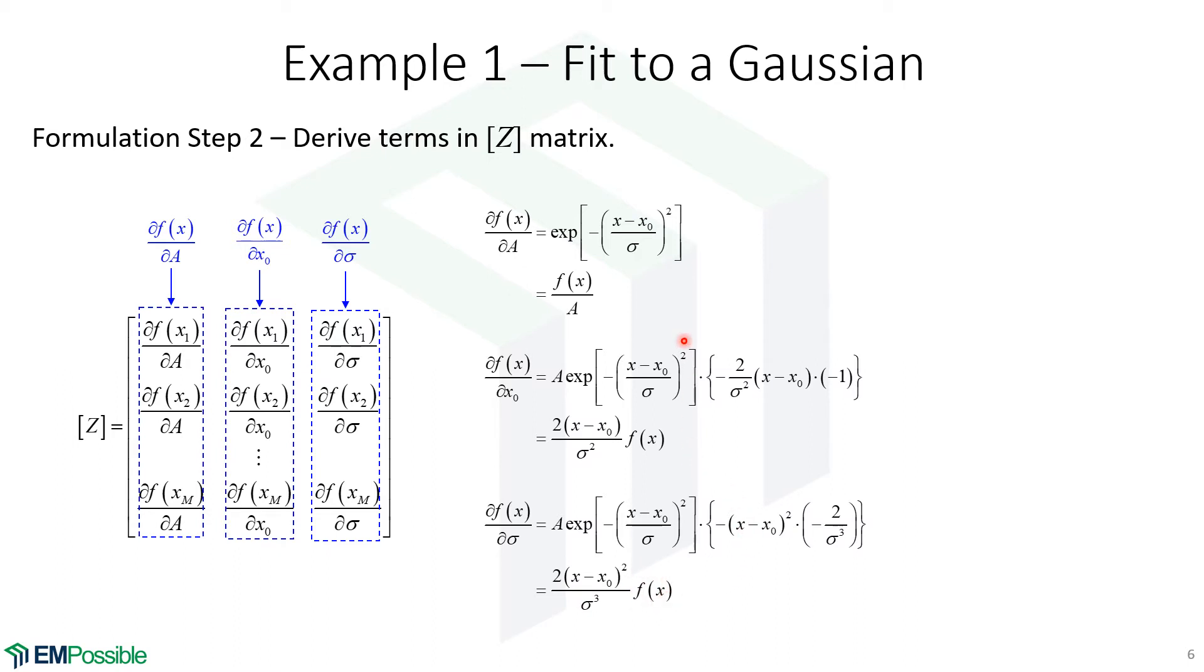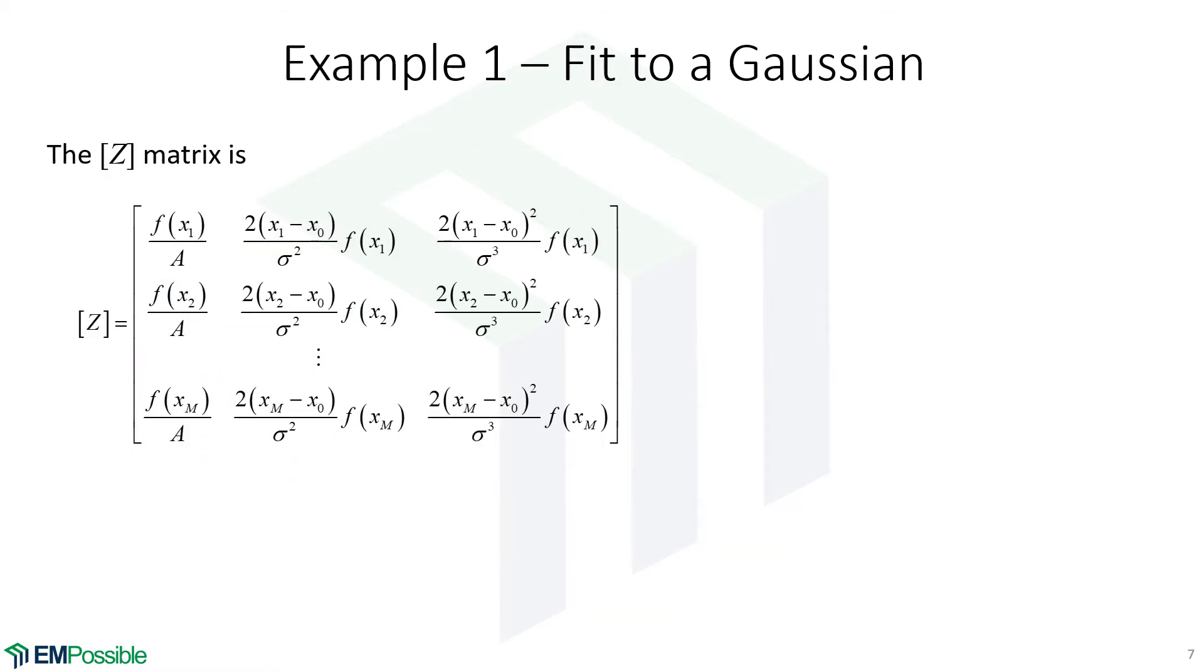And as I mentioned, doing it this way, since we're already going to be evaluating F, that makes it a little bit easier to evaluate those partial derivatives. So, in summary, there is our Z matrix. That's what we would write down on paper, and we would have that next to ourselves when we get into the code.